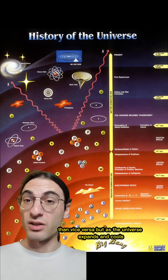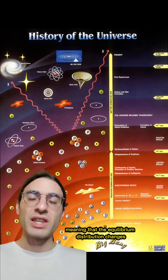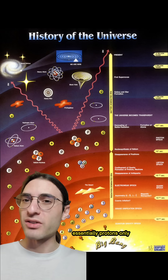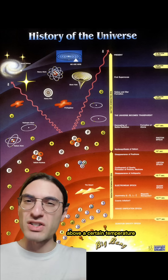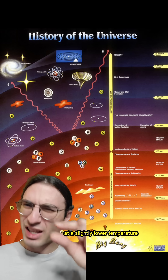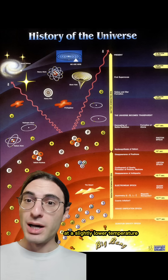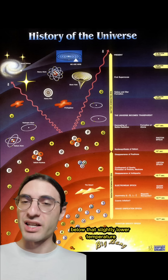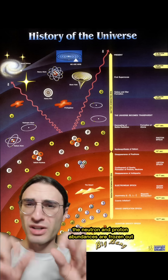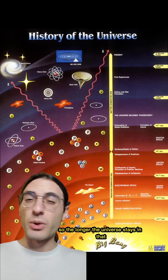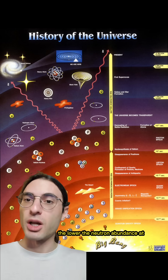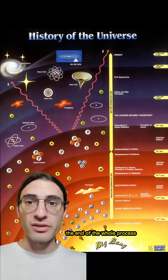But as the universe expands and cools, the rate of conversion changes, meaning that the equilibrium distribution changes. Essentially, protons only efficiently turn into neutrons above a certain temperature, and the reverse reaction can happen at a slightly lower temperature. But once the universe cools below that slightly lower temperature, the neutron and proton abundances are frozen out — they don't change anymore. So the longer the universe stays in that in-between temperature range, the lower the neutron abundance at the end of the whole process.